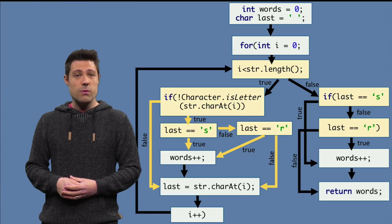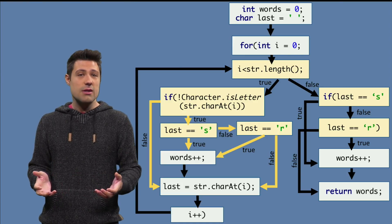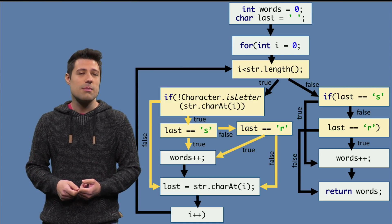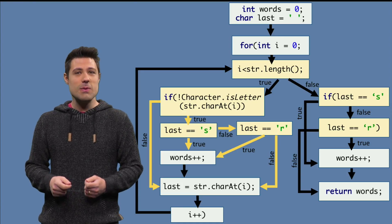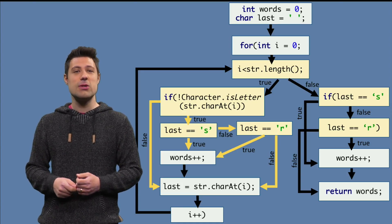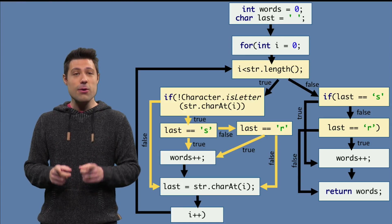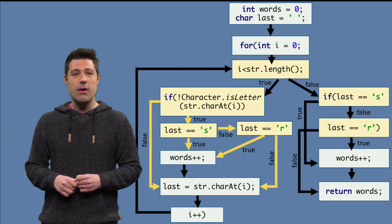From the picture, it seems that we indeed covered all the branches that came out from this if statement. But does this mean we are testing all the possible executions of this code? Pause this video for a minute and think about it.